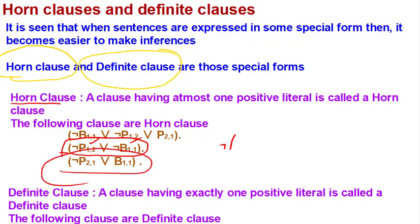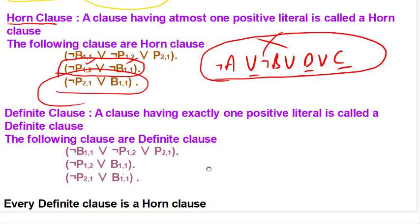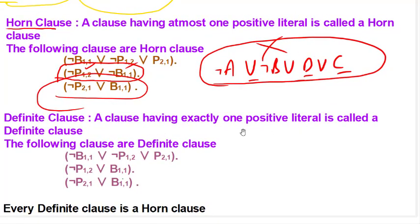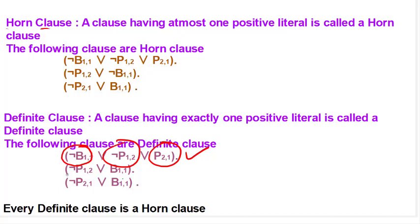If we have a clause like 'negation of A or negation of B or D or C', this is not a horn clause because it has two positive literals. So, either all literals are negative, or if there is any positive it should be only one. A definite clause is a clause having exactly one positive literal — there must be one positive and the rest all negative.